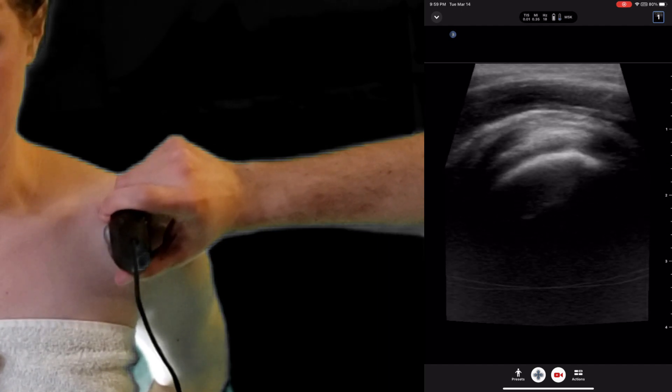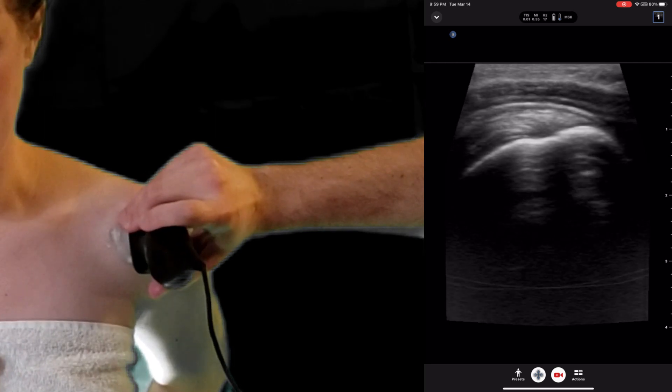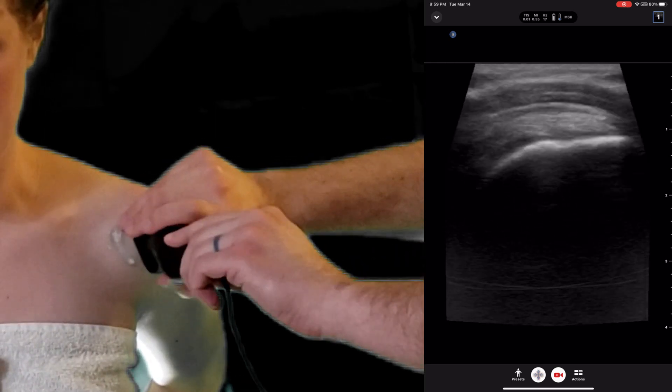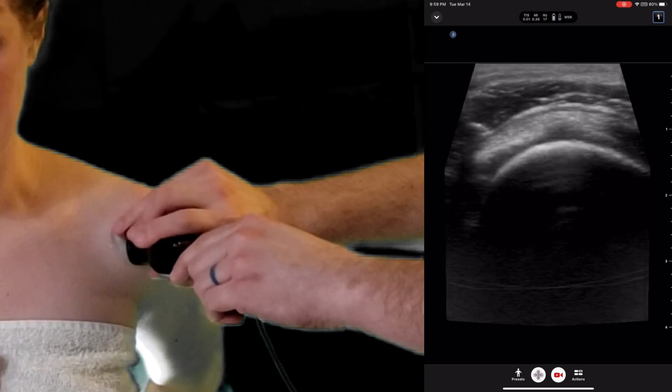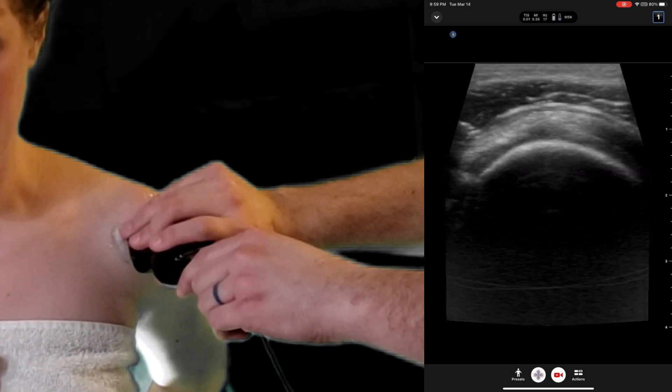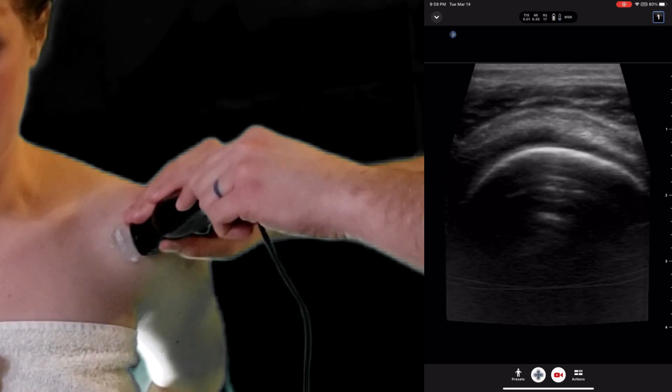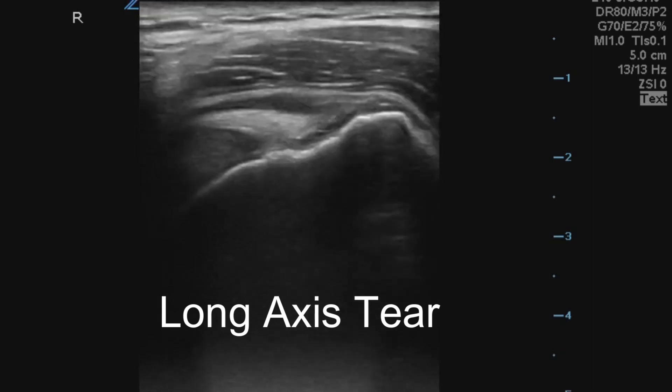Once we've evaluated the tendon in long axis, we'll turn the probe 90 degrees and evaluate the tendon in short axis, looking for any tears.